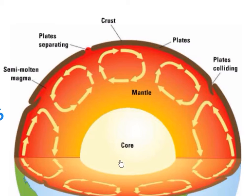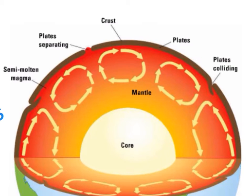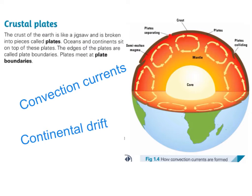To summarise: the core heats up the mantle, causing magma to rise upwards away from the core. The further away it goes, it cools down, gets heavier, and sinks back down towards the core — this movement is known as convection currents. This movement causes the plates floating on top of the mantle to either separate or collide. This cycle is repeated continuously in a circular motion, causing convection currents.